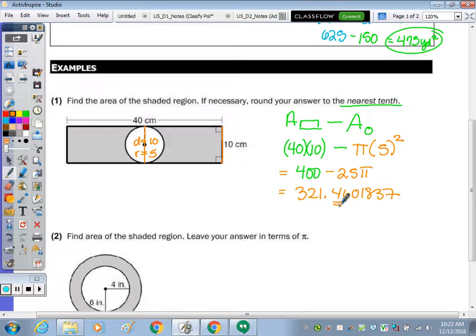The tens place is where the 4 is, and since to the right is a 6, it's going to bump that up to a 5. So the area is approximately 321.5. Include the unit centimeters squared.